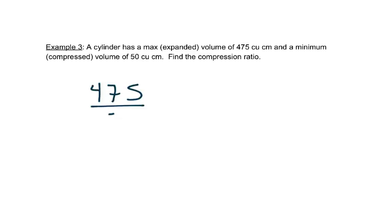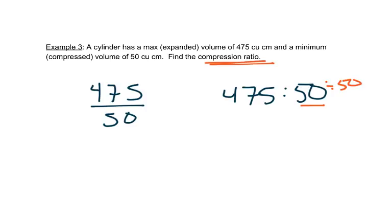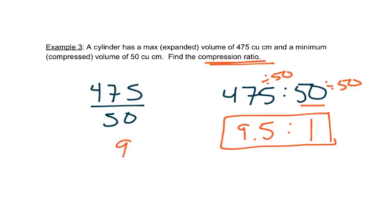So we'd write 475 over 50, or we could write 475 to 50. And with the compression ratio specifically, we want the second number to be 1. So we'd look at the second number, and if we want it to be 1, that would mean we'd have to divide by it. So we divide by 50. So if I take 475, and I divide by 50, I would get 9.5, and then 50 divided by 50 is 1. So that would be my compression ratio, or I can write it like this as well. So it's okay to have that decimal specifically for compression ratios, because we want this second number to be 1.